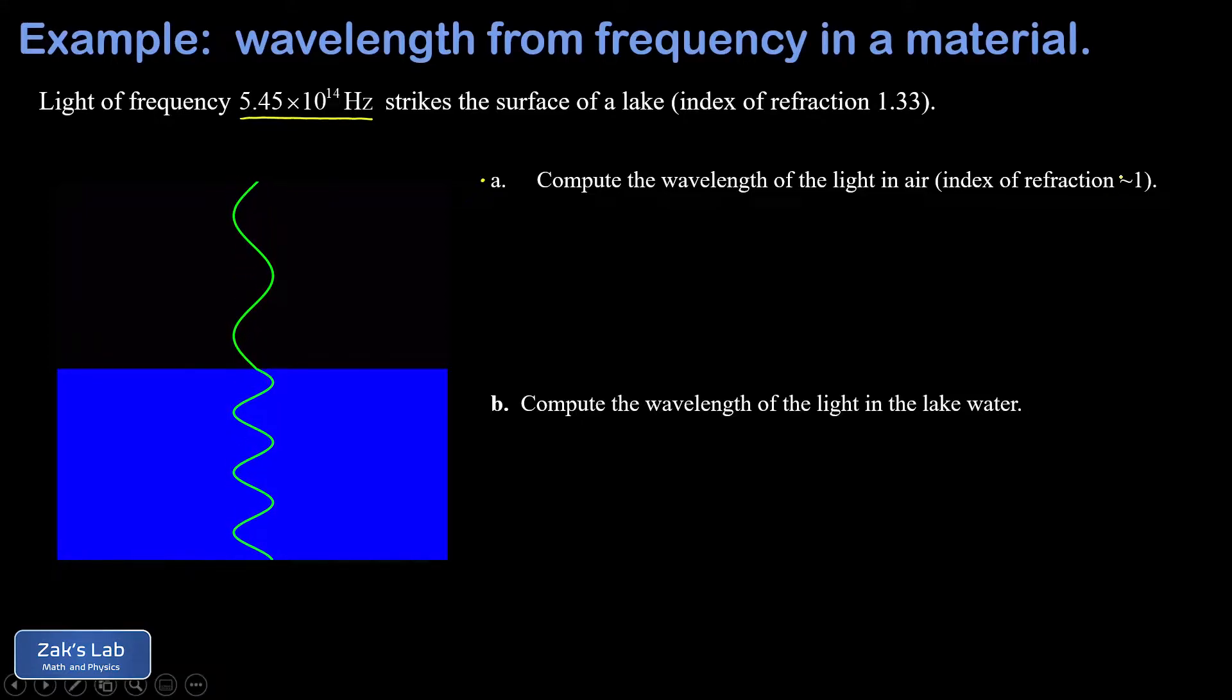We can see in the animation that when the light wave transitions into this new medium, which happens to be a lake, the wavelength gets shorter because the speed of light becomes smaller. Our job in part b is to compute the new wavelength of light in that medium.